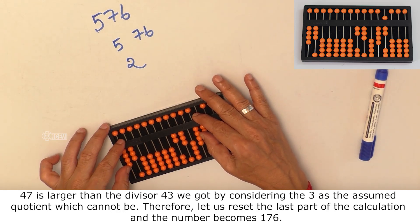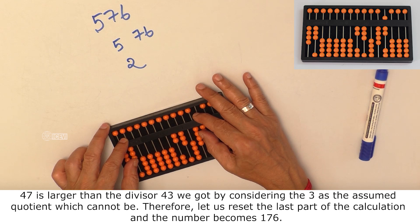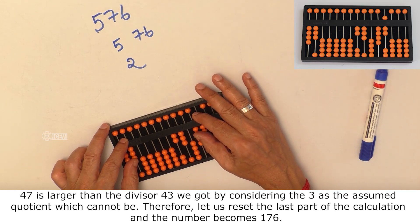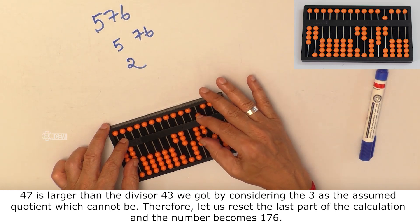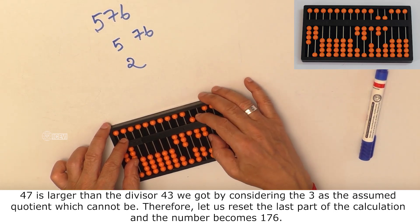47 is larger than the divisor 43 we got by considering the number 3 as the assumed quotient which cannot be. And therefore, let us reset the last part of the calculation and the number becomes 176.